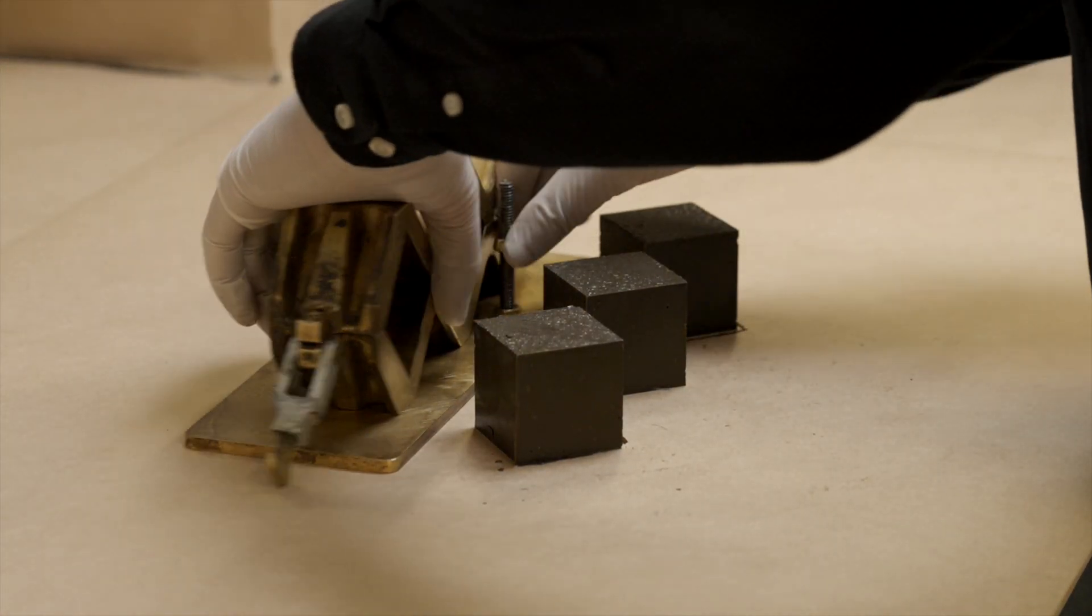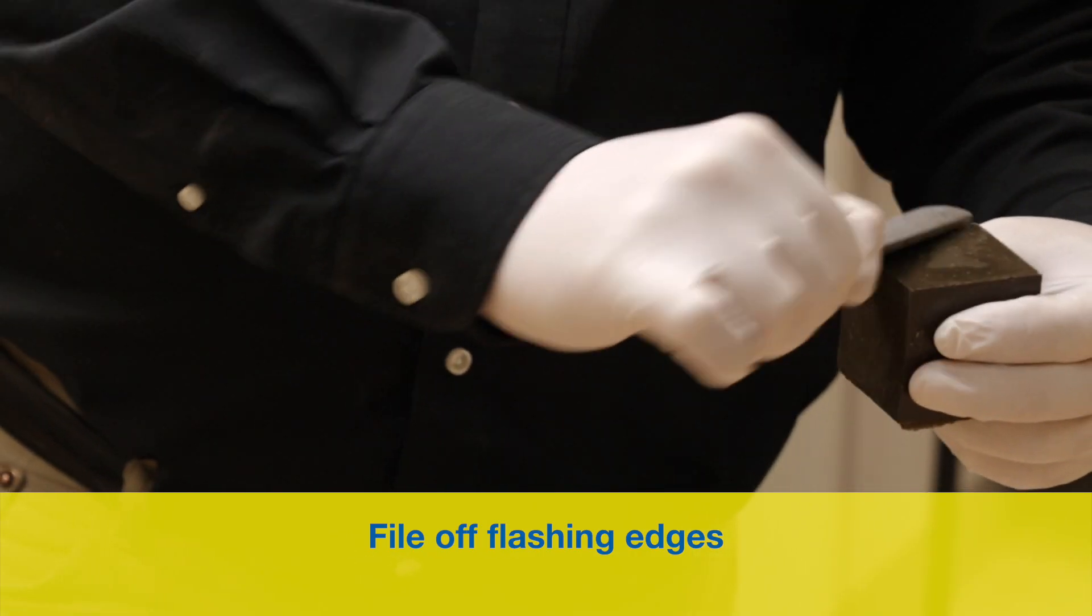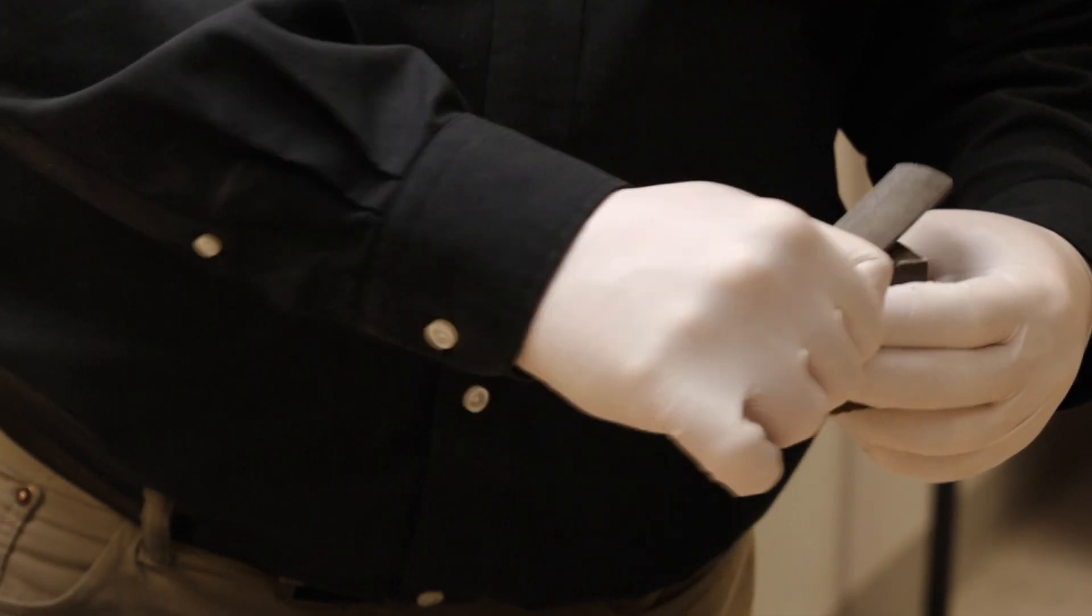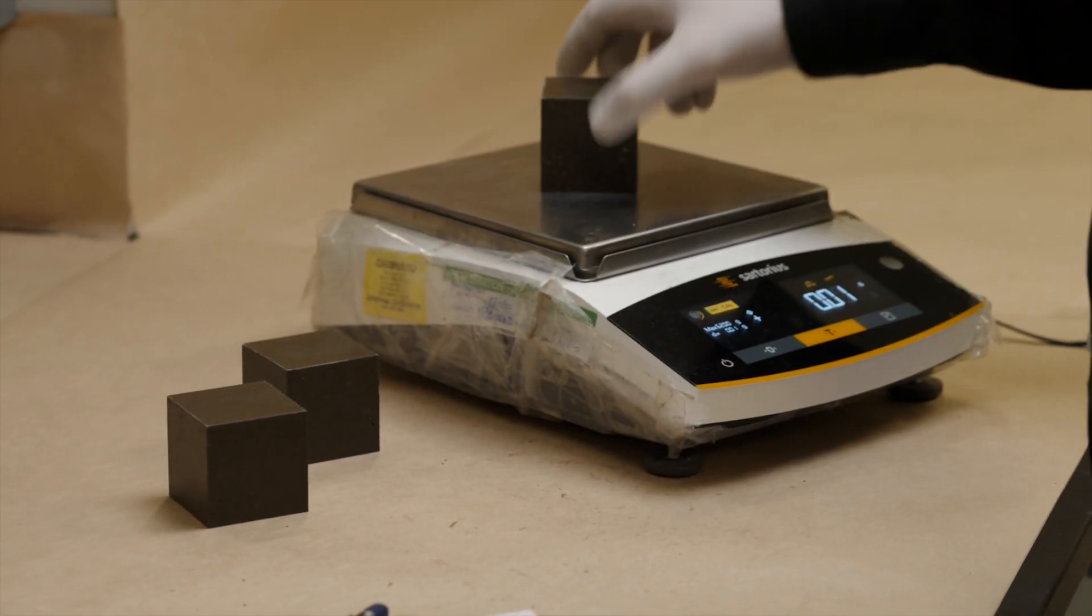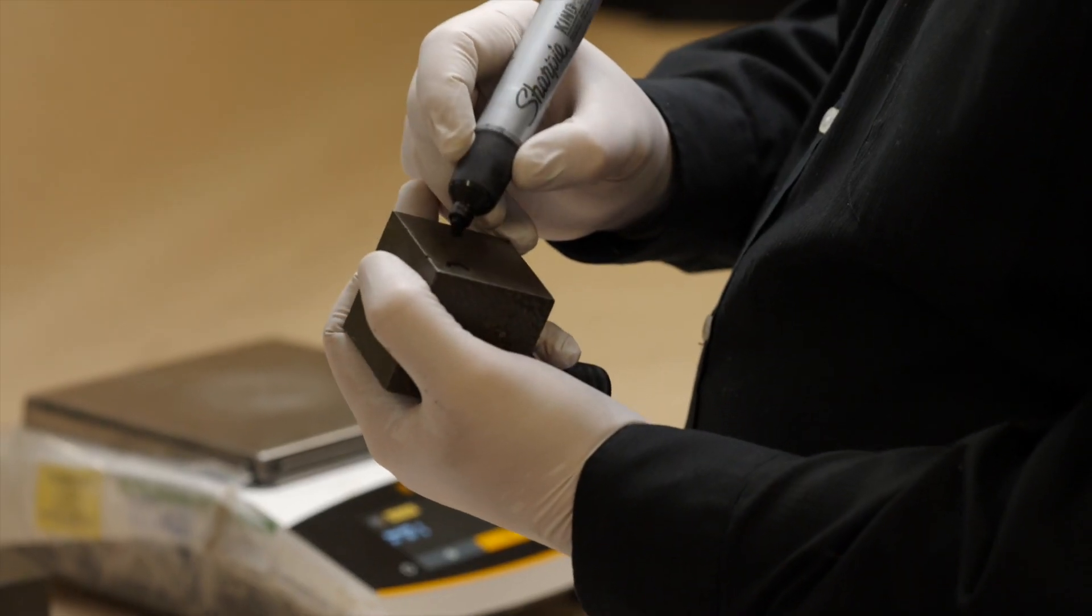Release the cured cubes from the brass mold. File off flashing edges on each load face to ensure good contact with the test machine plates, which avoids point loading. Once filed, weigh samples and record the weights in your sample record book and on each cube with a permanent marker.